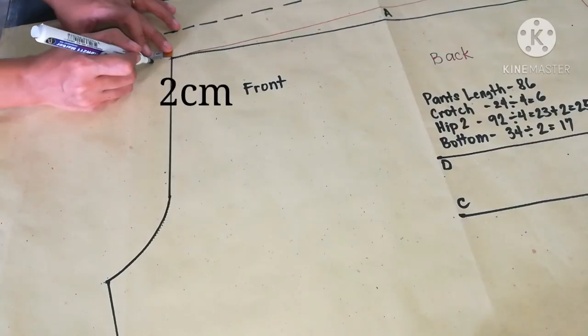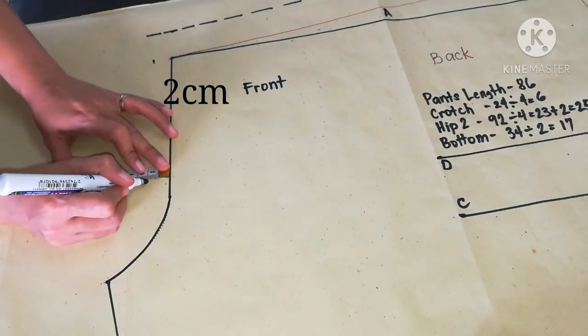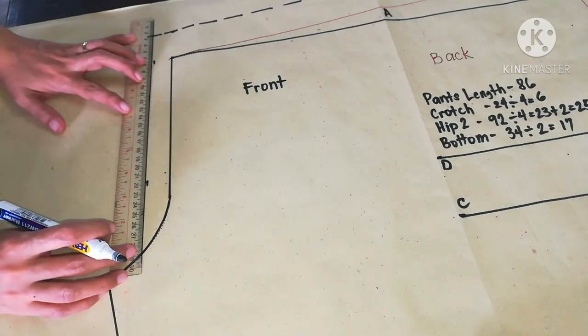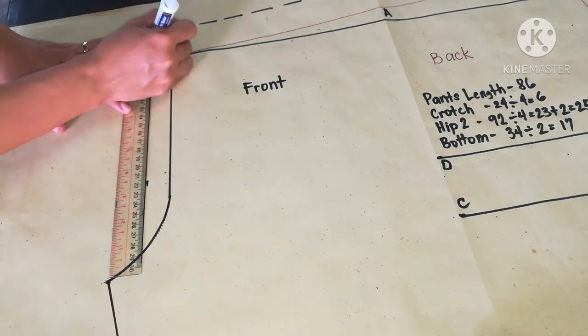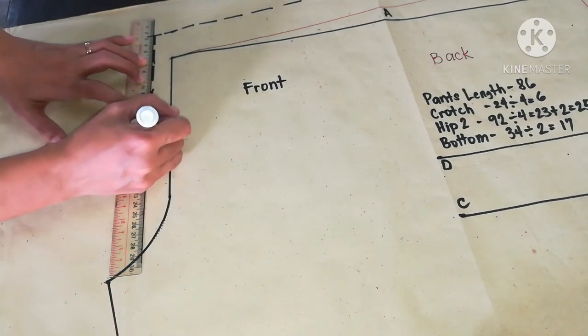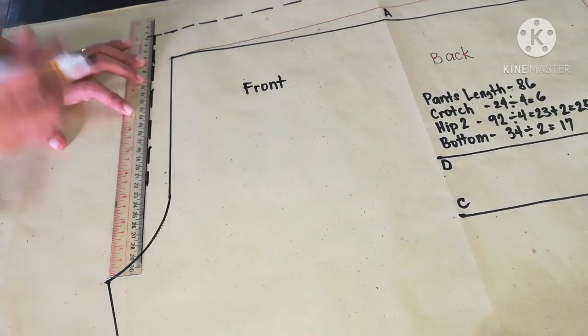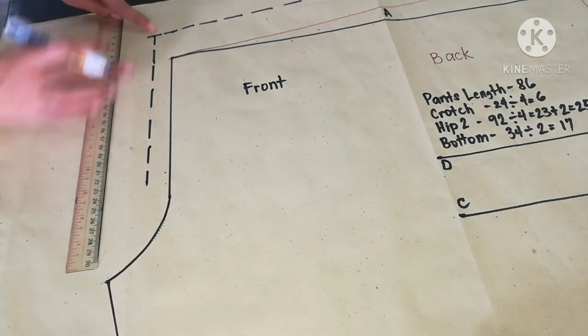2 centimeters for the crotch. Make sure that corners are connected.